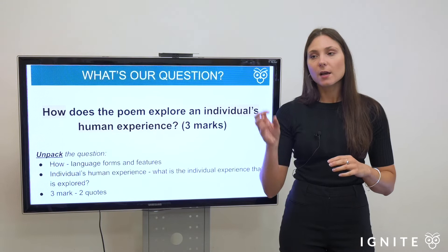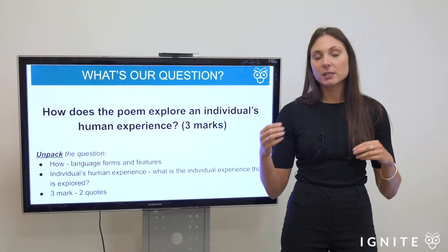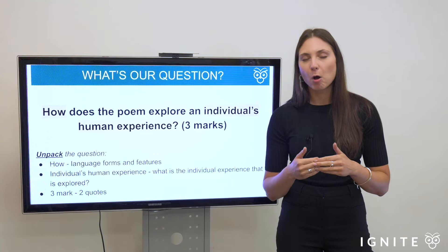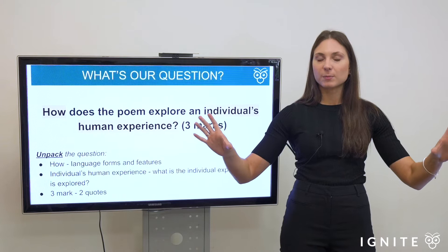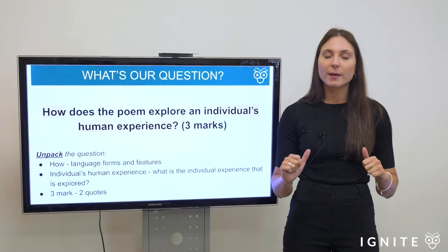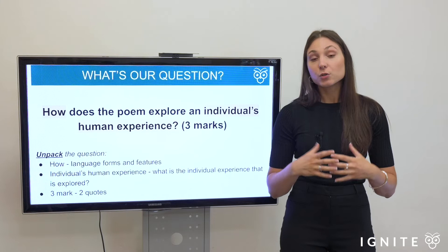A key bit of advice to help unpack the question is through the application of micro questions — words such as 'what,' 'how,' 'why,' 'to what extent,' or 'what is the relevance.' Applying those words to key terms in the question gives you scope to add meaning. For example, applying 'what' to 'individual experiences' forces you to answer: what is the individual experience represented in the poem? In doing so, you show the marker you've actually understood what the question is asking.